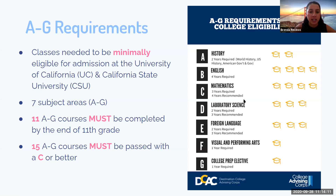The first subject area is the A section: history and social science courses. Students must complete a total of two years. The second subject area is the B section — English. Students must complete a total of four years of English. The third subject area is the C section: mathematics. Students are required to complete a total of three years of mathematics. We do recommend students take an additional year of math so they can be seen as more competitive when applying to colleges.